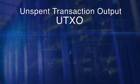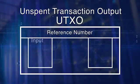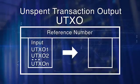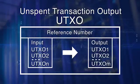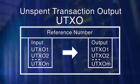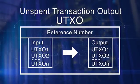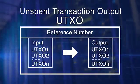UTXOs are referenced as inputs in a transaction, and are also outputs generated by a transaction. All of the UTXOs in a system are stored by the participant nodes in a database. Now let's review the role of UTXOs in a Bitcoin blockchain.